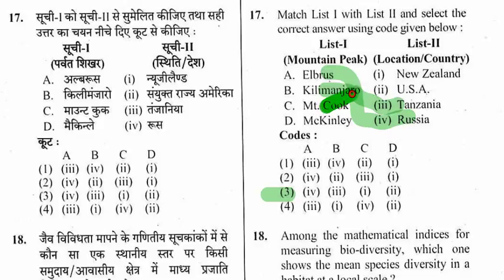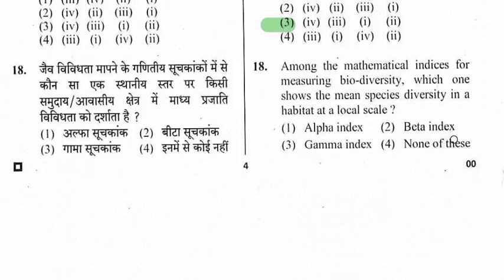Question 18: Among the mathematical indices for measuring biodiversity, which one shows mean species diversity in a habitat at a local scale? Options are alpha index, beta index, gamma index, and none of these. This is a very important question. The right option is A — alpha index.